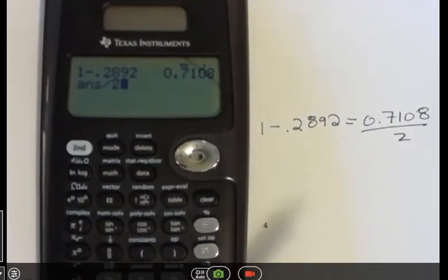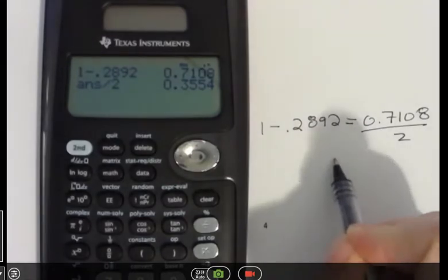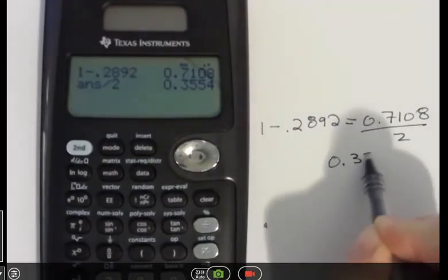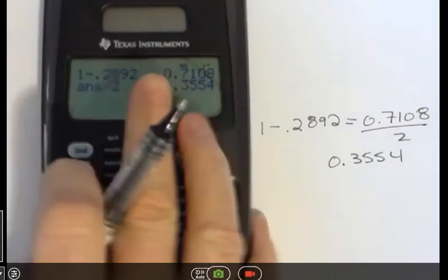So I'm going to divide that value by 2. And that means that I get 0.3554 from my area over here.